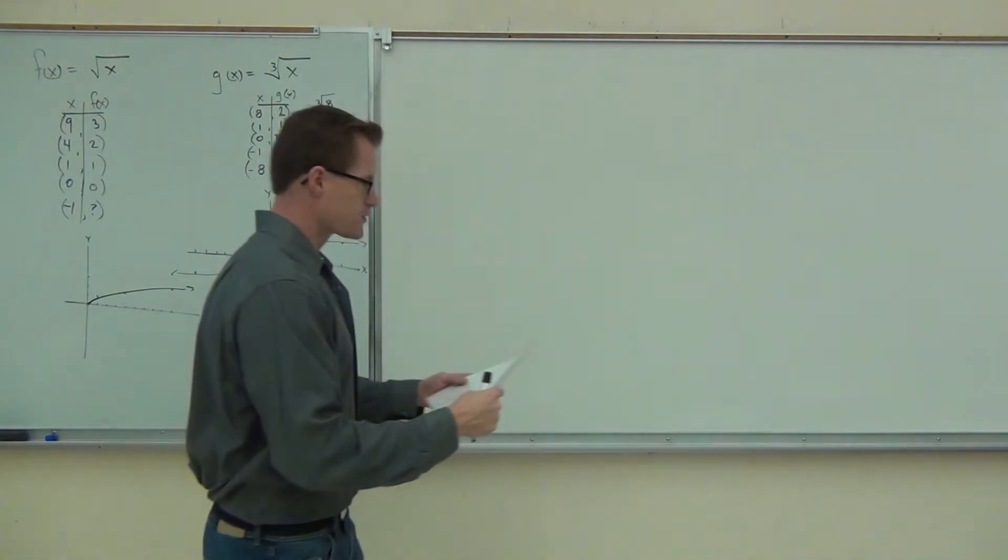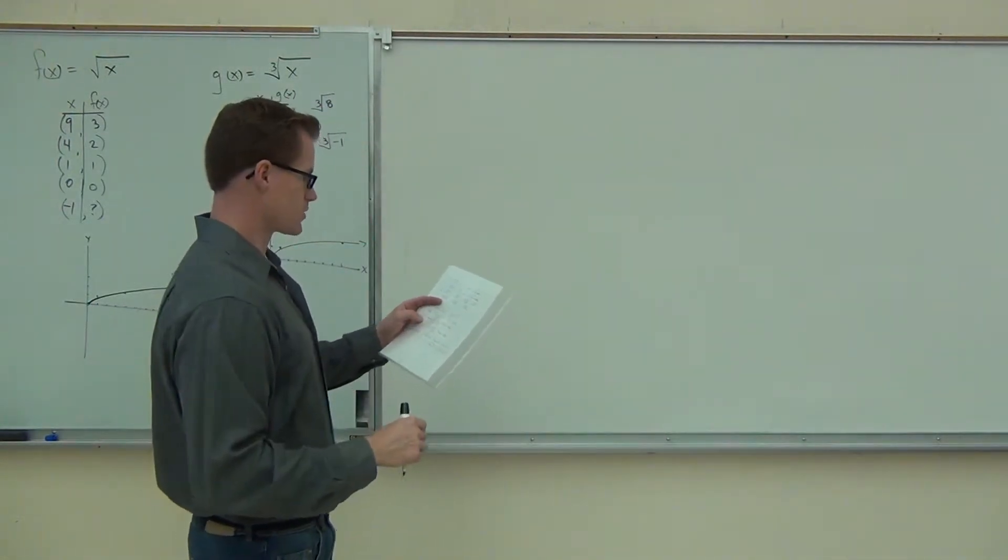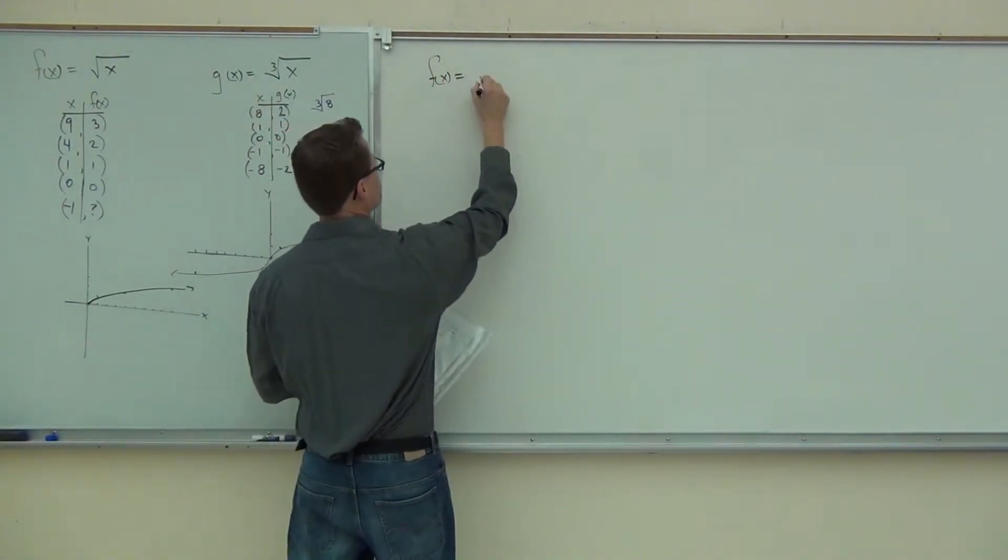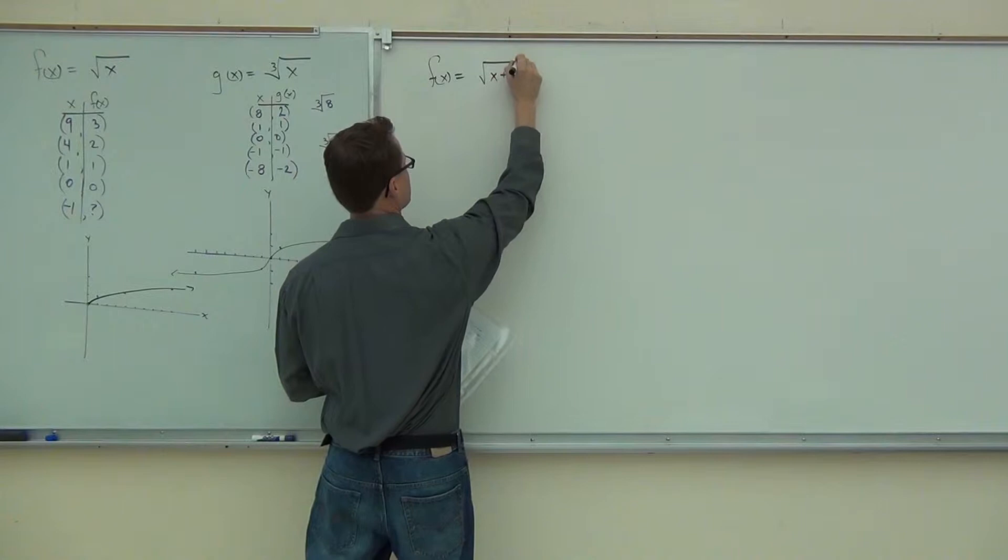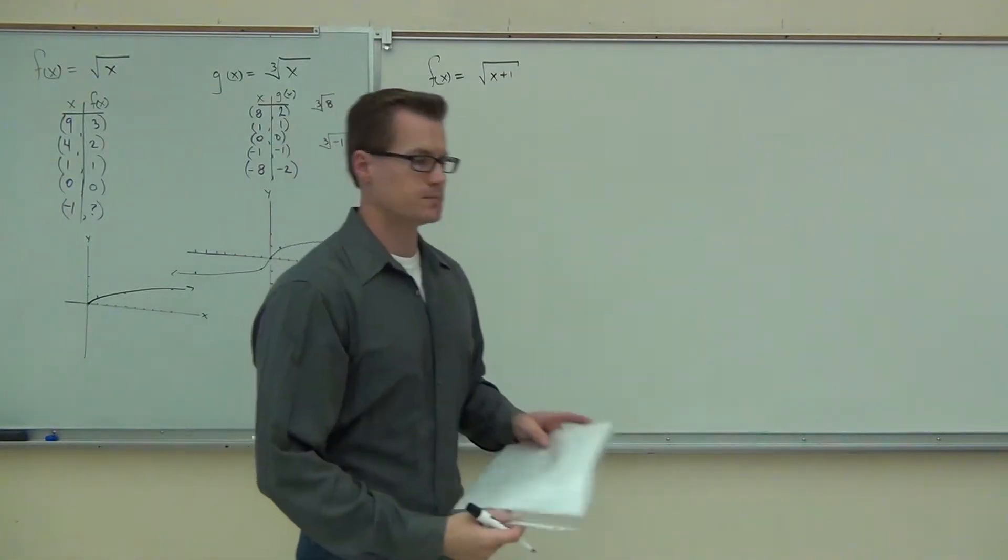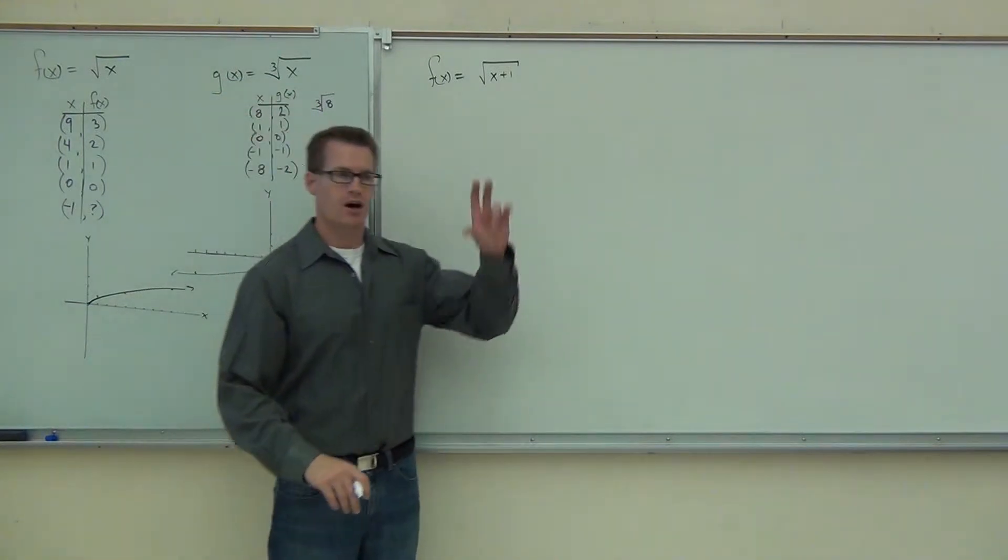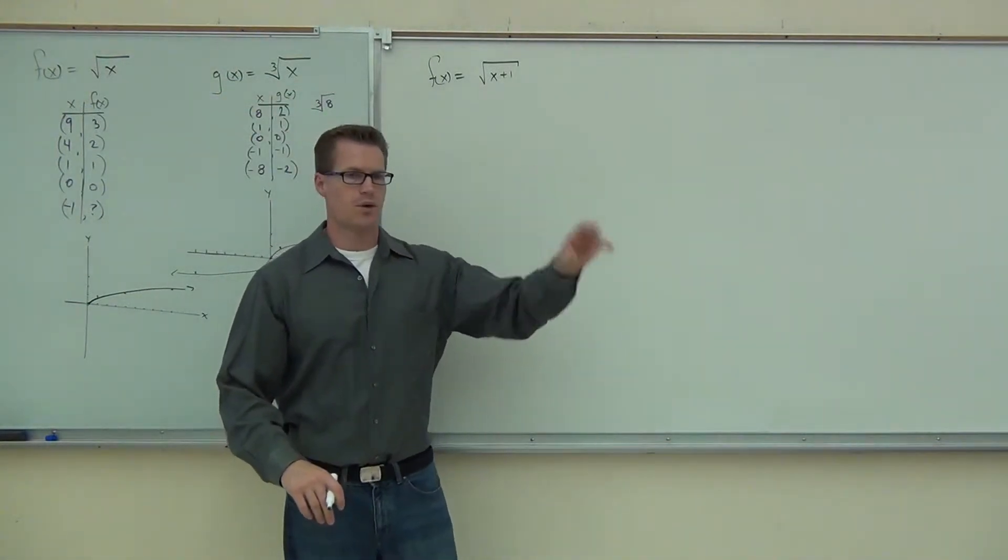So since we just graphed some of those things on your test, if I ask you to do f of x equals square root of x plus 1 like this where it's inside of the radical, you should be able to tell me what type of a shift that is. Is that a shift up, down, left, or right?